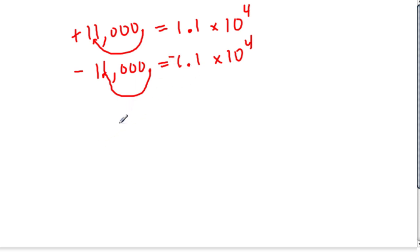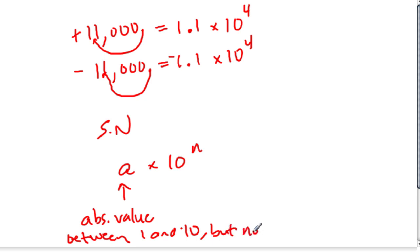And why does this work? Well, let's go back to our definition of scientific notation. It's some number times 10 to some power. This first number, I should have said the absolute value of this number is between 1 and 10, but not equal to 10.